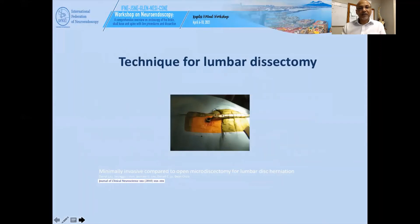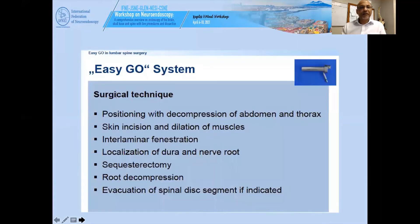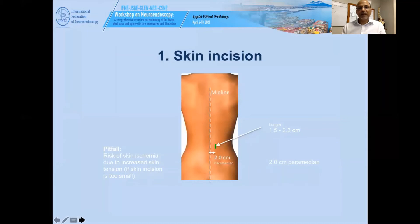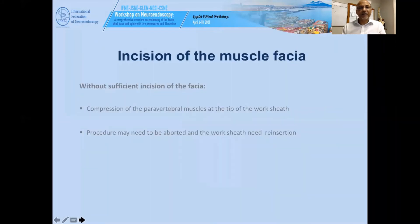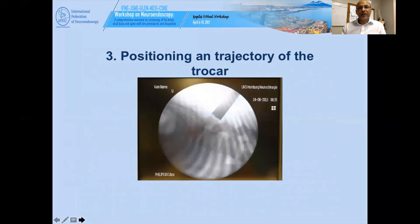Comparing minimally invasive to microsurgical approach, the technique involves positioning with decompression of abdomen and thorax, skin incision, interlaminar fenestration, localization of dura and nerve root, root decompression, and evacuation of the spinal disc segment if necessary. The basic principle is an incision 2 centimeters paramedian, 1.5 to 2.5 centimeters long, targeting the inferior edge of the lamina. The fascia must be opened to ensure there are no problems, otherwise a clot may require reinsertion of the tubular retractors.